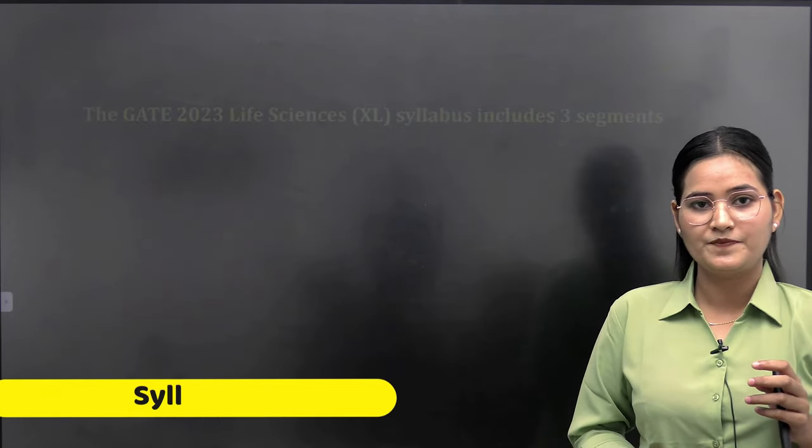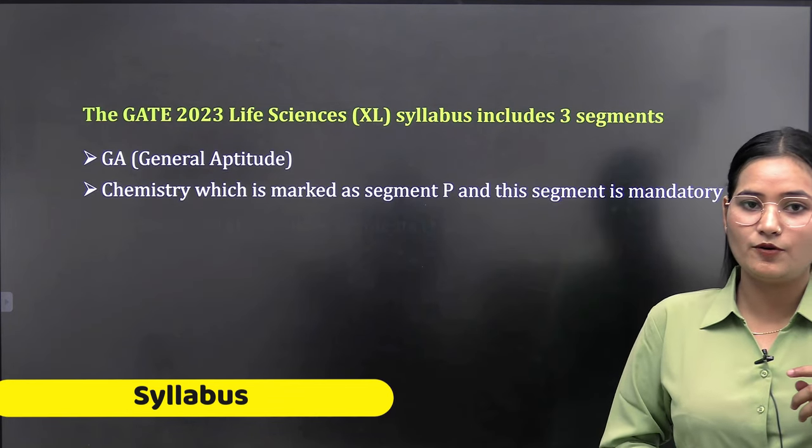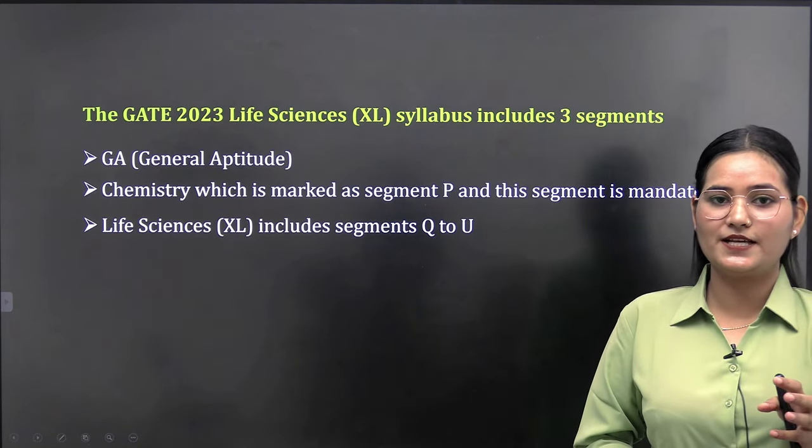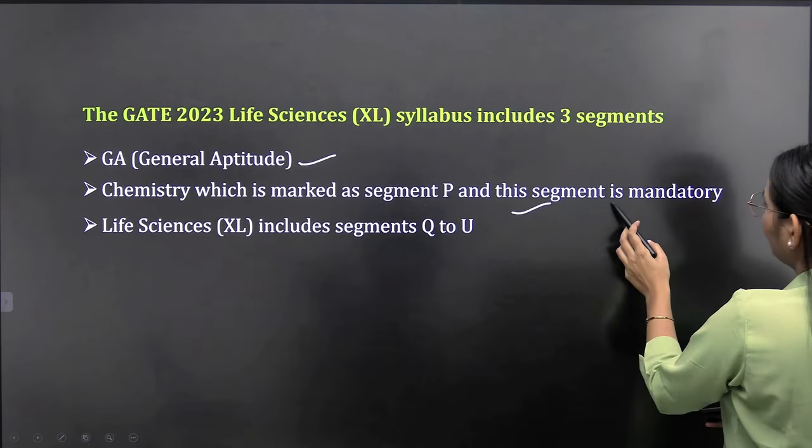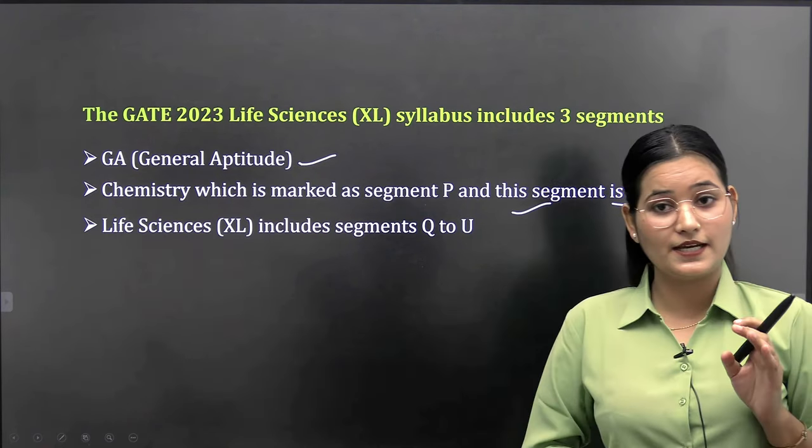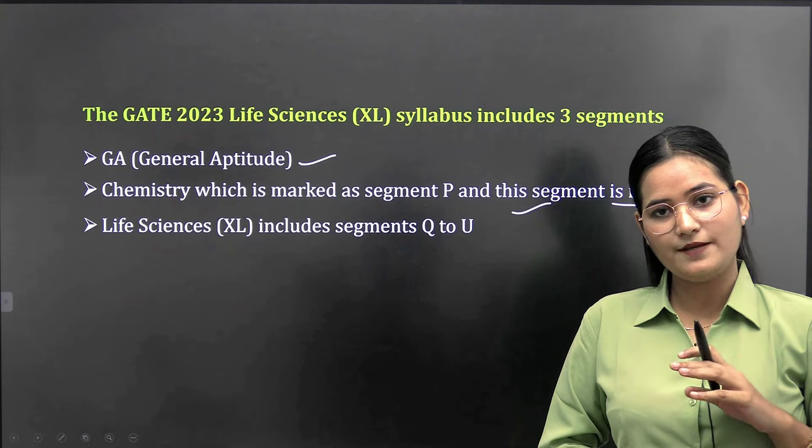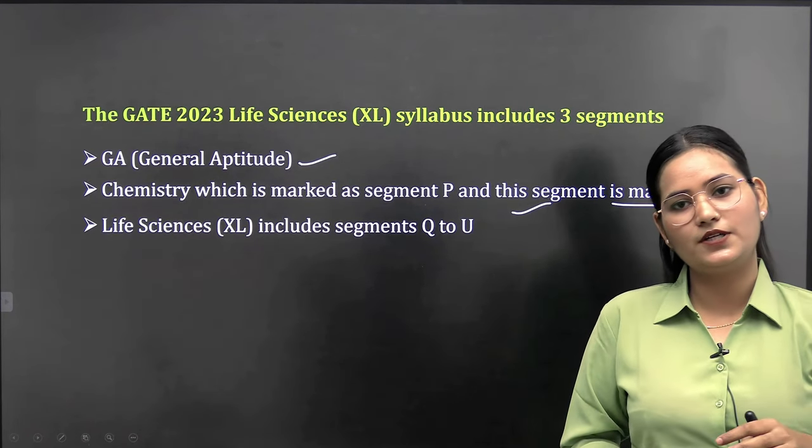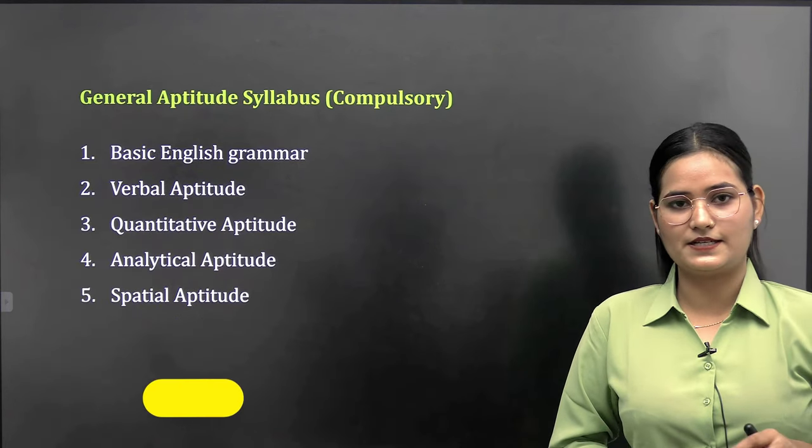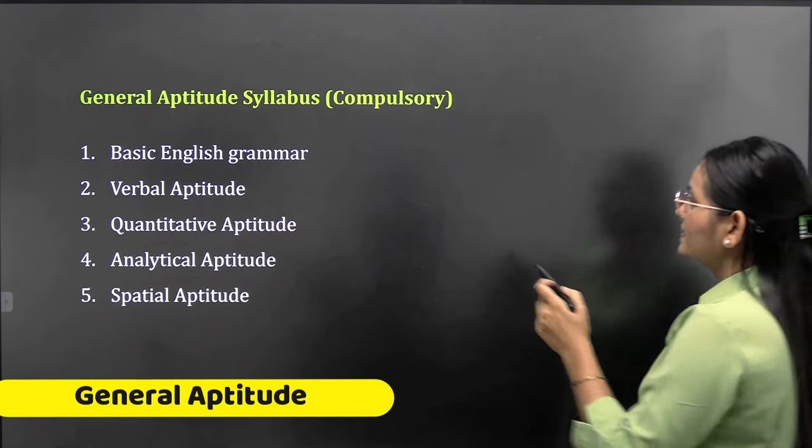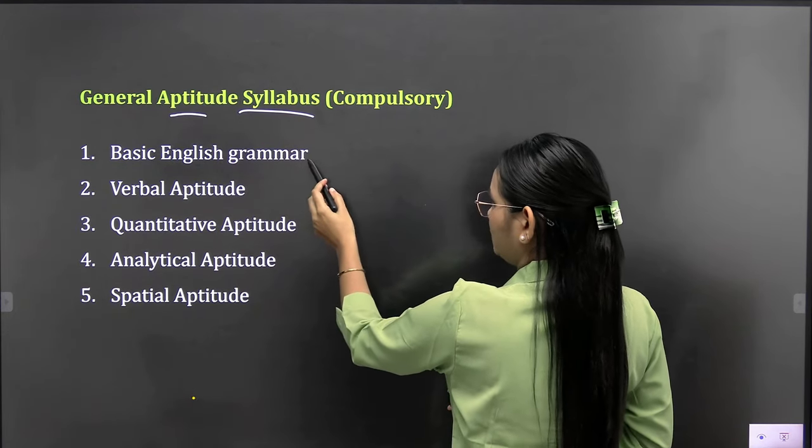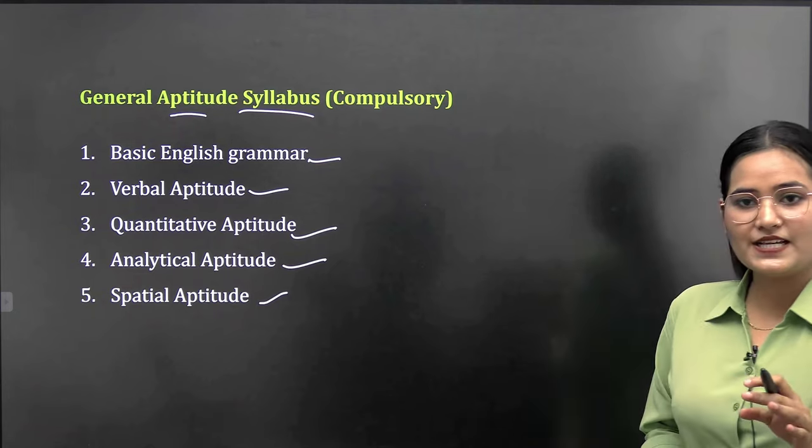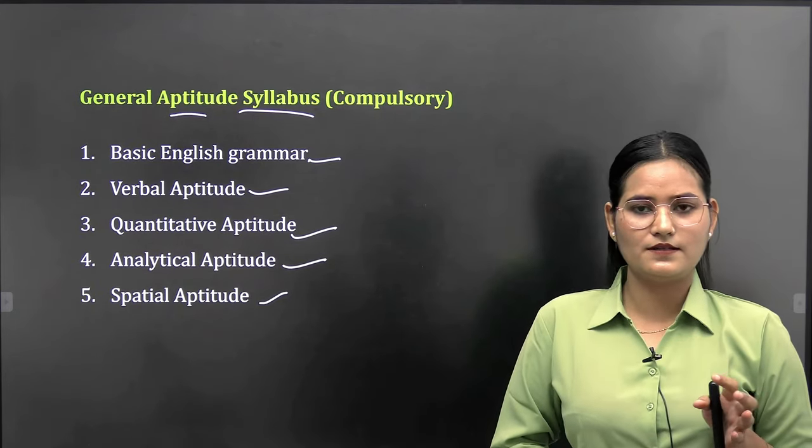Now coming to the syllabus part. As I have already mentioned, gate life science examination is divided into 3 parts. First is general aptitude, second is chemistry, and third is life science. General aptitude and chemistry are mandatory portions you have to attempt. In life science, there will be five sections: botany, zoology, biochemistry, microbiology, and food technology. You can choose any two subjects. In general aptitude, you have to study basic English grammar, verbal aptitude, quantitative aptitude, and analytical and spatial aptitude.